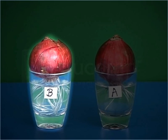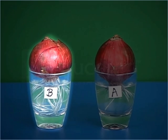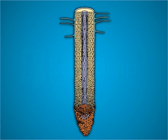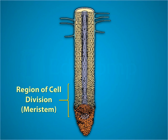In case of tumbler B, since the roots have not been cut, the root tip continues to grow longer. This root tip is a region of growth. The root tip consists of a tissue called meristematic tissue whose cells keep dividing and hence results in the growth of roots.